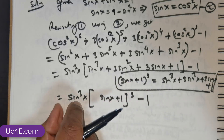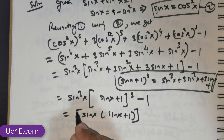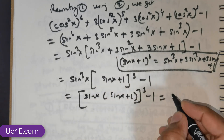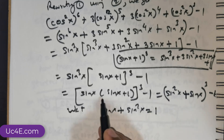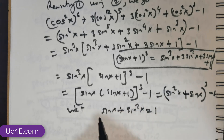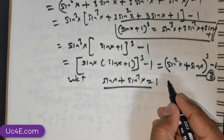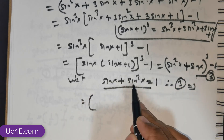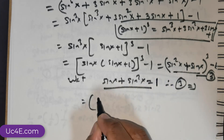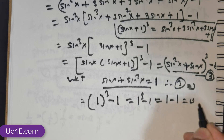Now this is (sin x + 1)³. Can I rewrite this as sin x · (sin x + 1)³ − 1? Distributing sin x gives sin²x + sin x, raised to the power of 3, minus 1. We know that sin x + sin²x = 1. So replacing sin x + sin²x with 1, we get 1³ − 1, which is 1 − 1 = 0.